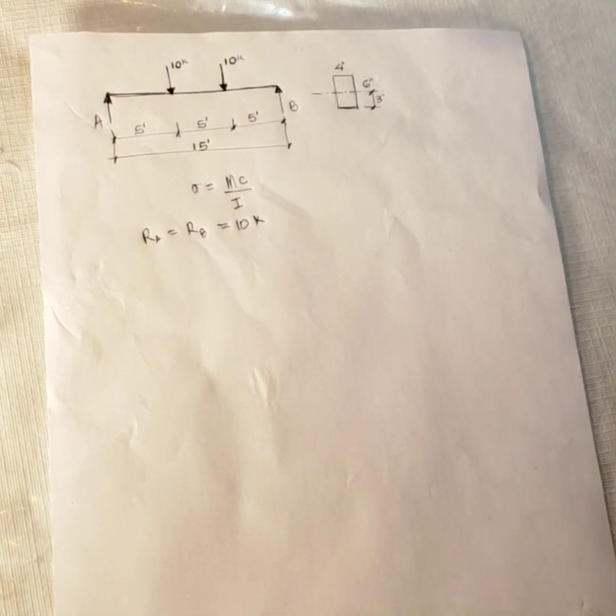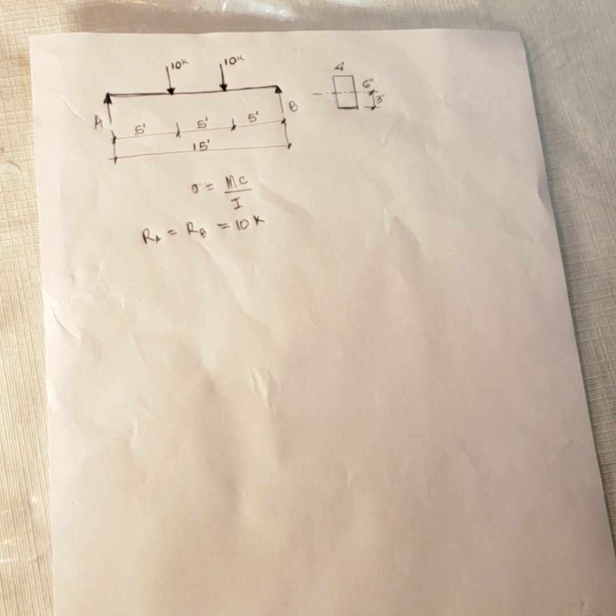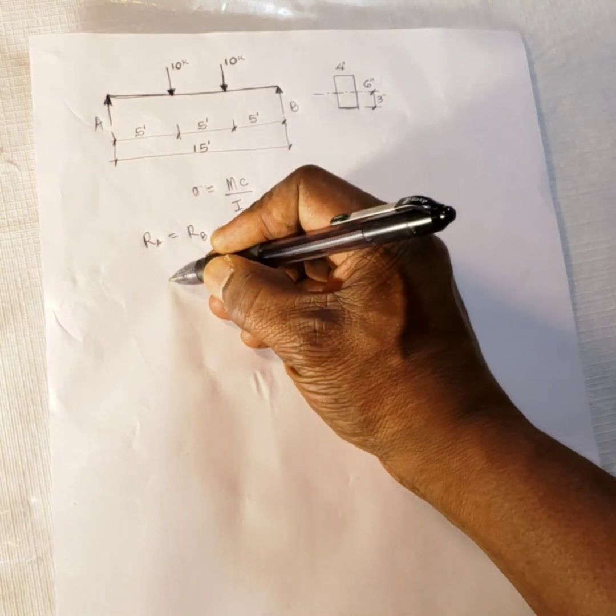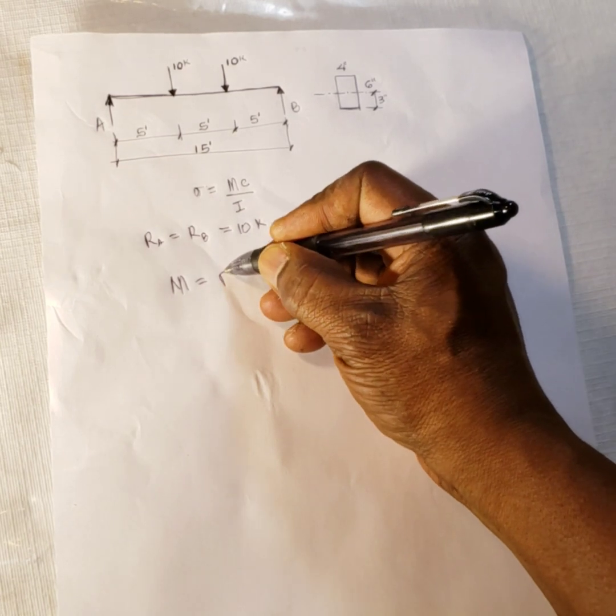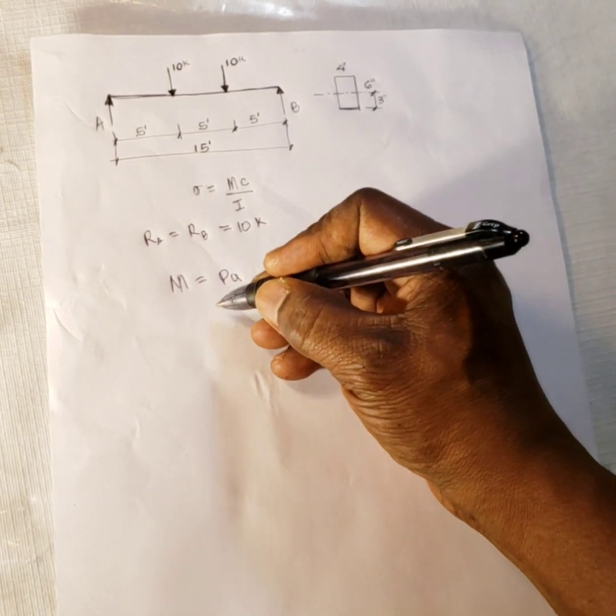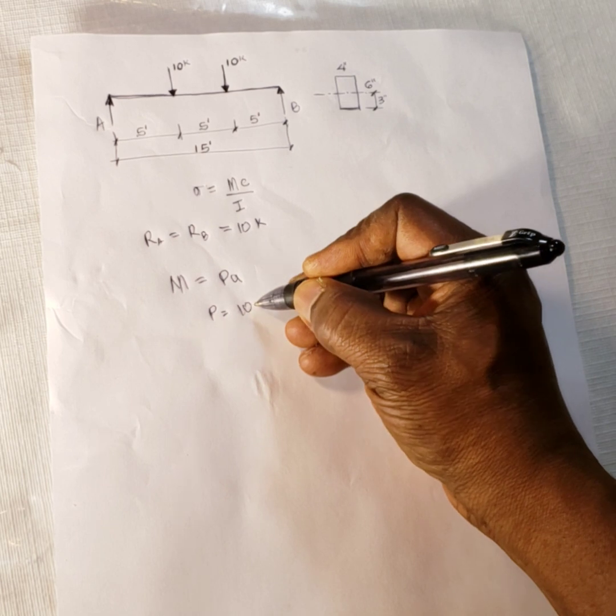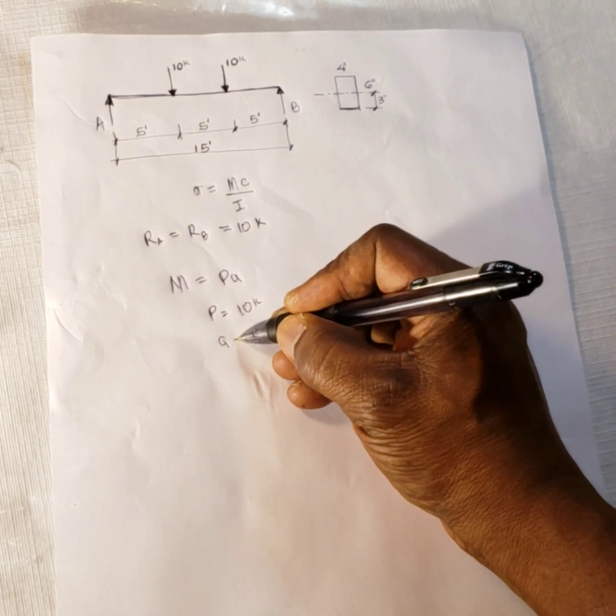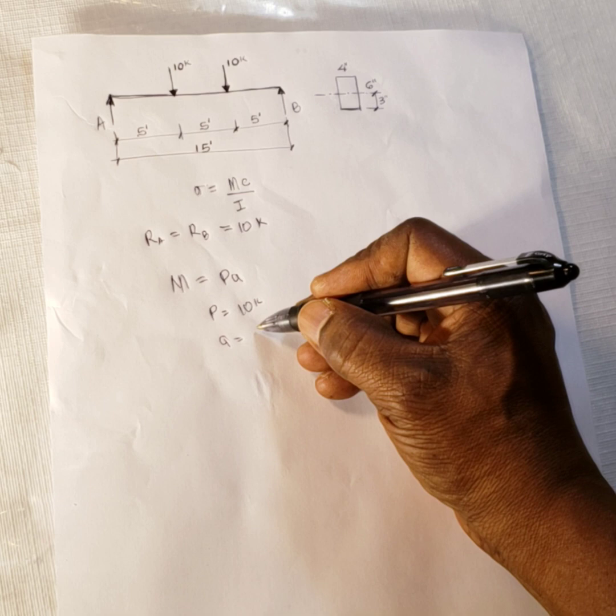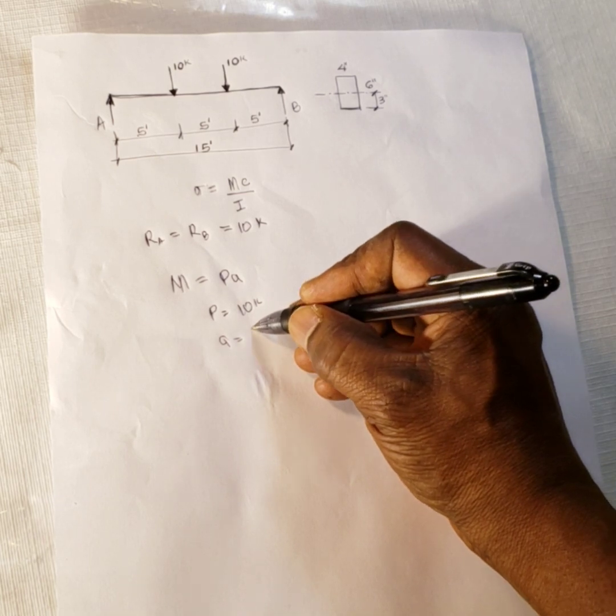Now that is taken care of. Now to solve for a moment of a simply supported beam with two point load and the point load are equal and they are equally spaced apart, there is a short derived formula for that. And that is M is equal to PA. So P is equal to the load, which is ten kip. And A is equal to the distance between them and the distance from the support of the load, which is five feet.